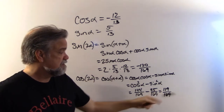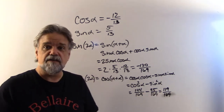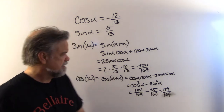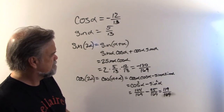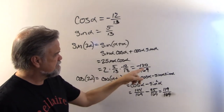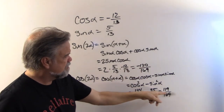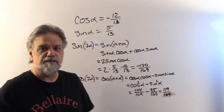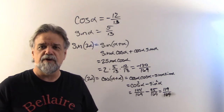So the sine of 2α is negative 120/169 and the cosine of 2α is 119/169. This looks like it's really close to negative 45 degrees because those are almost the same magnitude, but not quite.